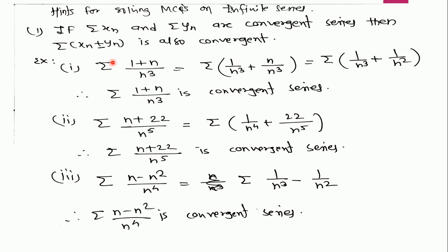See example: if we have the series summation of (1 + N) / N³, then this can be written as summation 1/N³ plus summation N/N³, which equals summation 1/N³ plus summation 1/N². These are both P-series with P greater than 1, therefore both are convergent. This series is the sum of two convergent series, therefore it is also convergent.